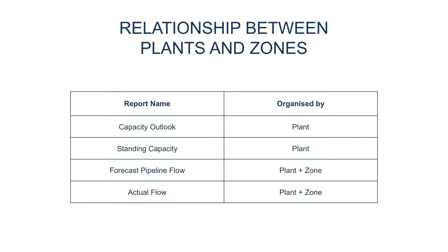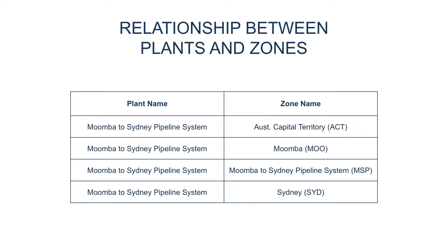Reports like the capacity outlook on the GBB require information by plant only, because this information isn't specific to a particular zone. But gas flow data is specific to both the plant and the zone. As a result, most pipelines on the bulletin board typically report to more than one zone, so a given pipeline will submit flows for each of the zones that it delivers gas to.